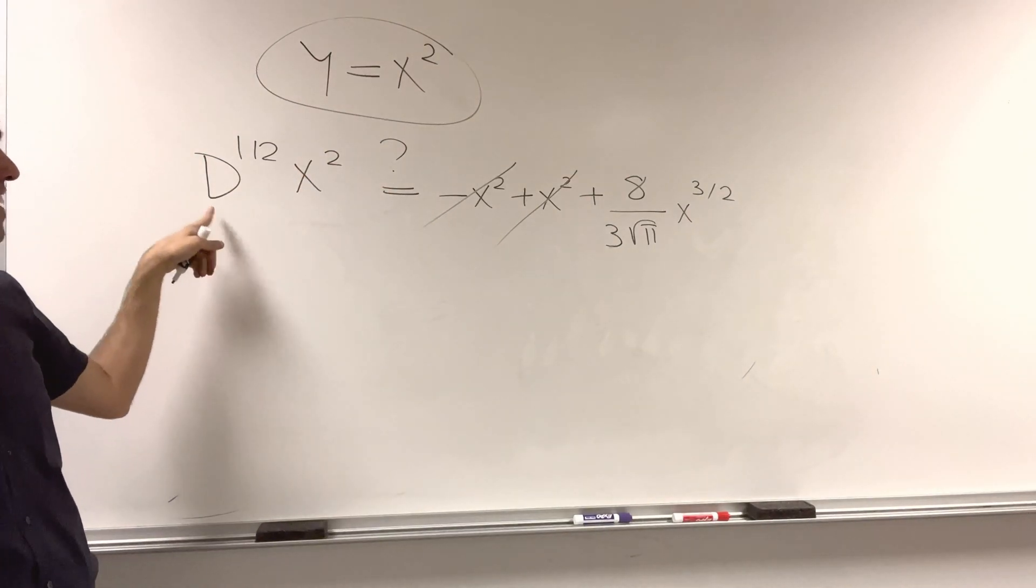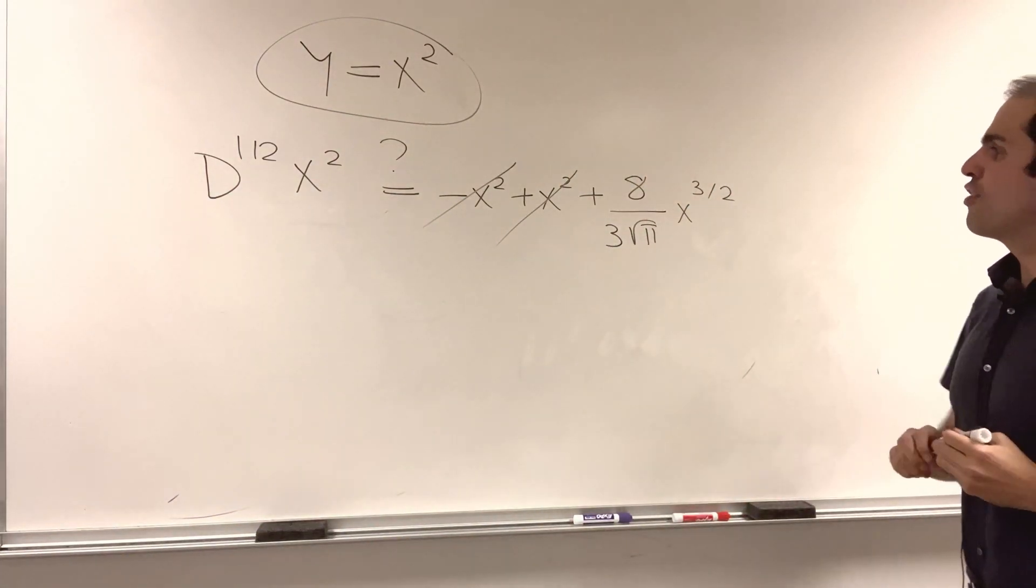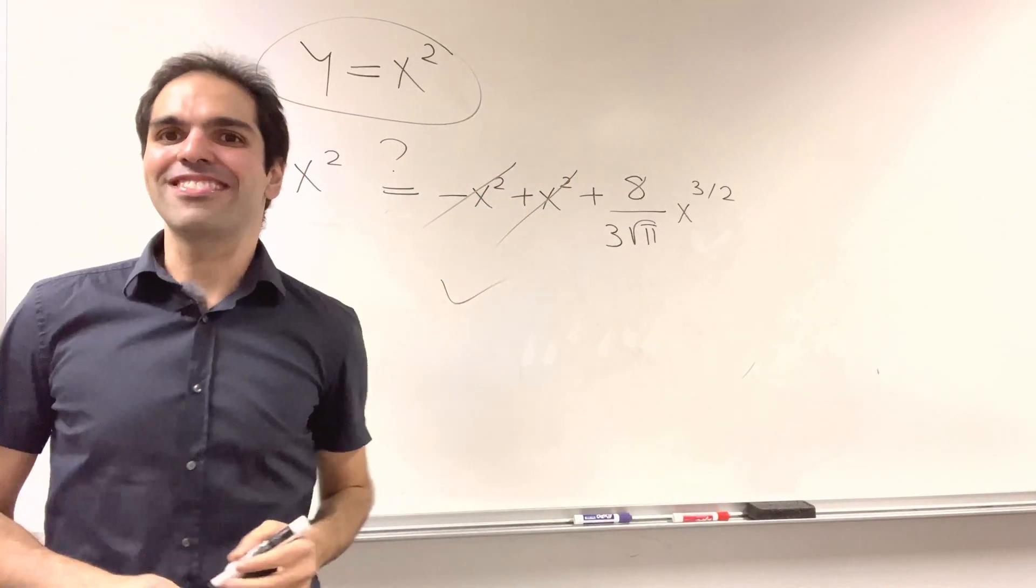Because notice, in fact, we have calculated that the half derivative of x² is 8 over 3√π times x to the 3/2. So this works.